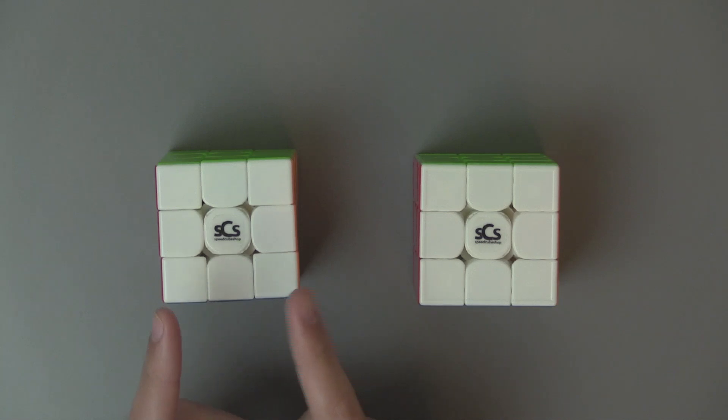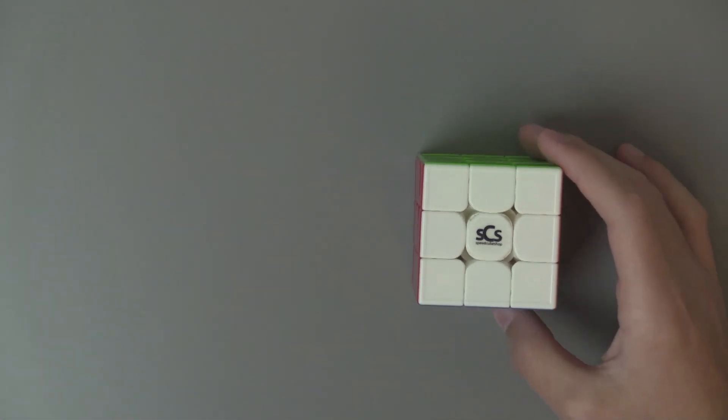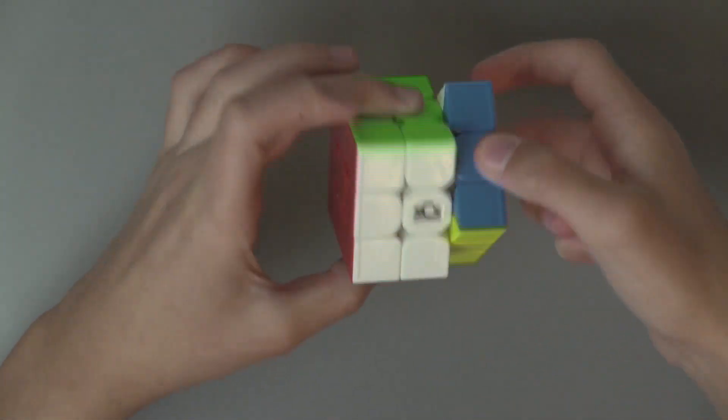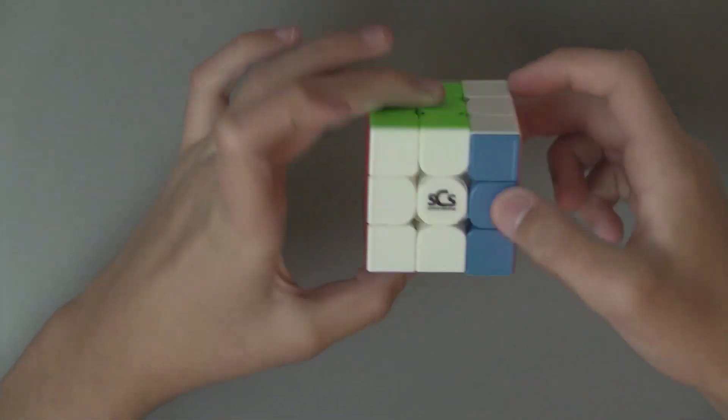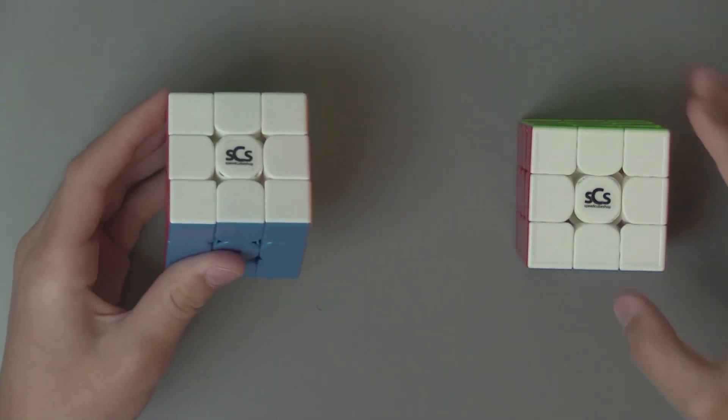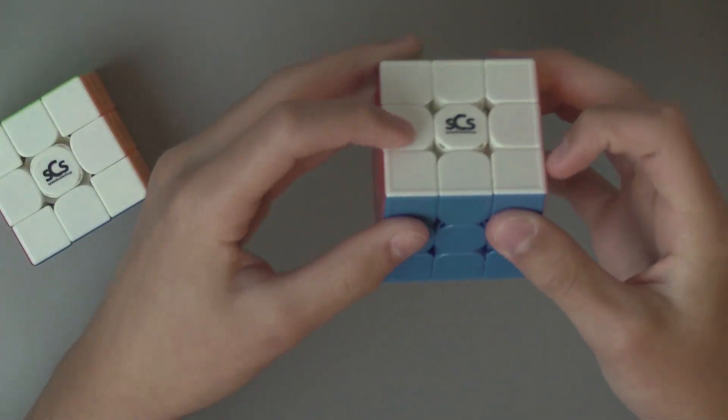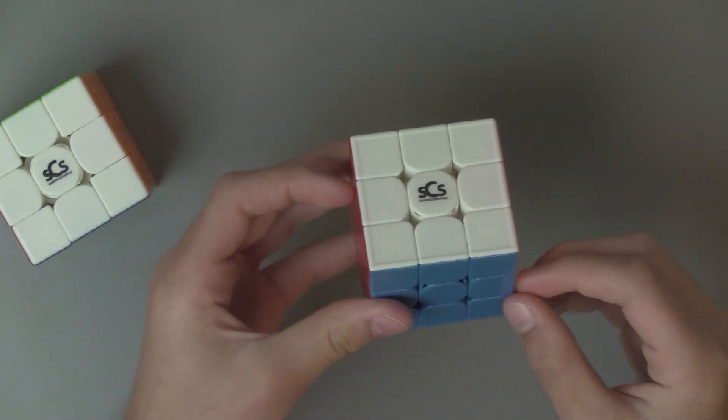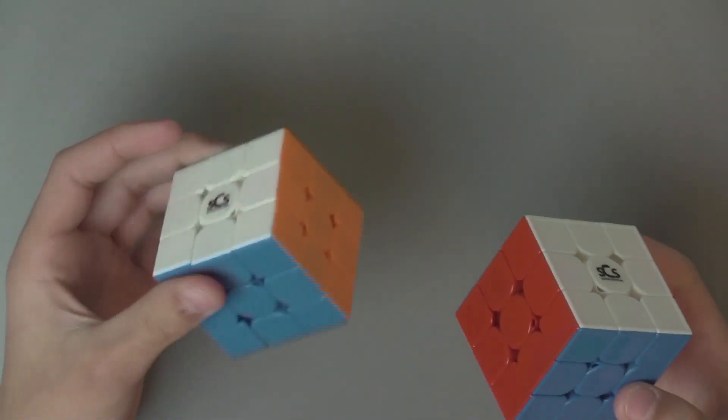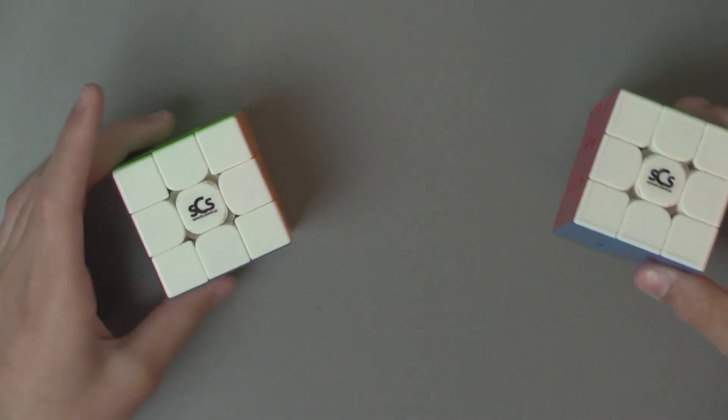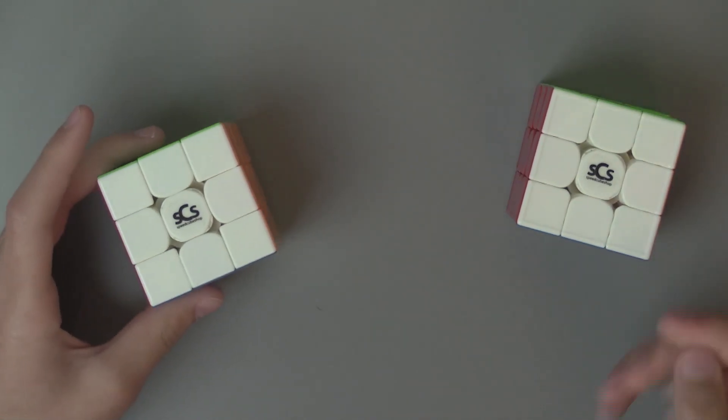But they actually made the magnet strength much lighter. So a lot of people like the GTS-3M because of the strong magnets, and you can tell when you're turning. And they were excited for the WRM because a lot of people didn't like the ridges on the GTS-3M. I personally don't see the problem with them. I probably would prefer without, but I don't think it really slows me down to have them, and doesn't really bother me when solving, because they're pretty small.